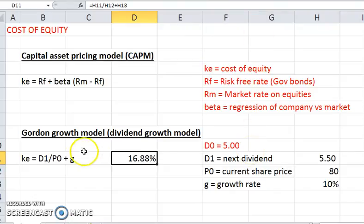So we've got the Capital Asset Pricing Model and the Gordon Growth Model. The cost of equity ideally should be the same using both methods, but because there's a lot of assumptions that we make along the way, they could be slightly different.